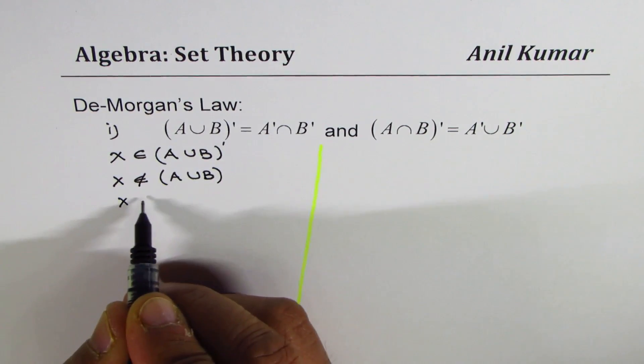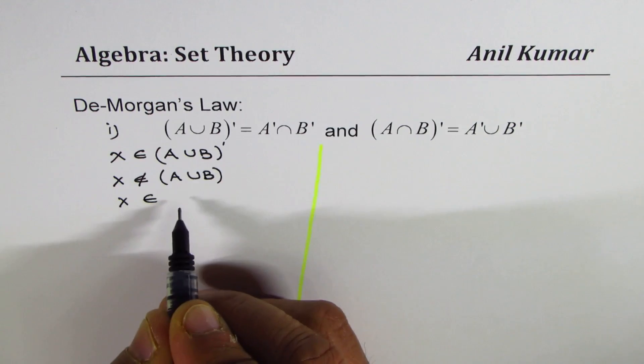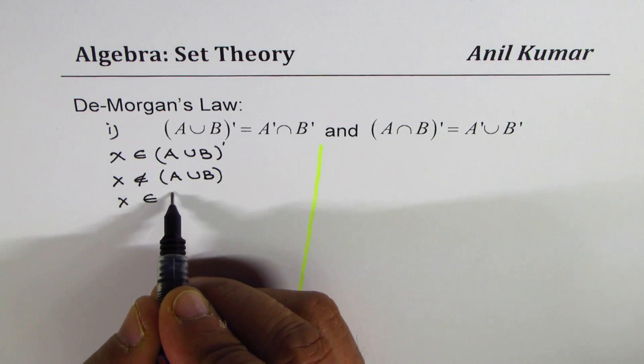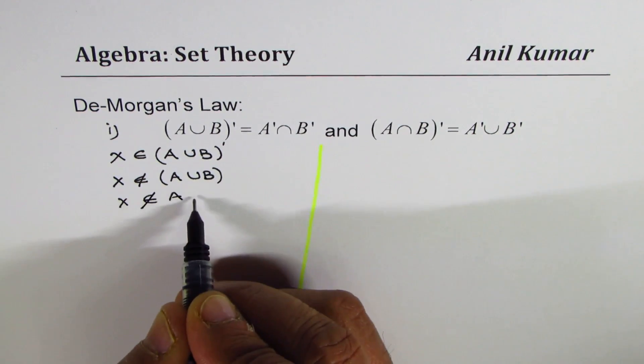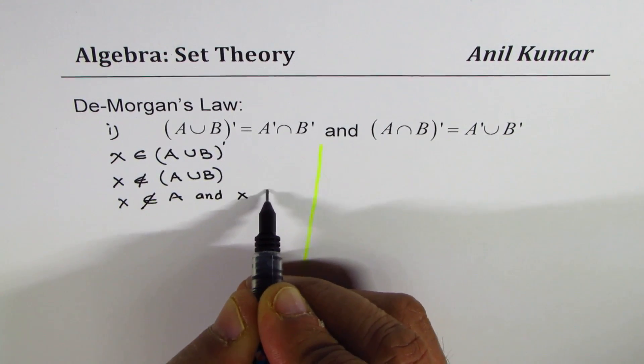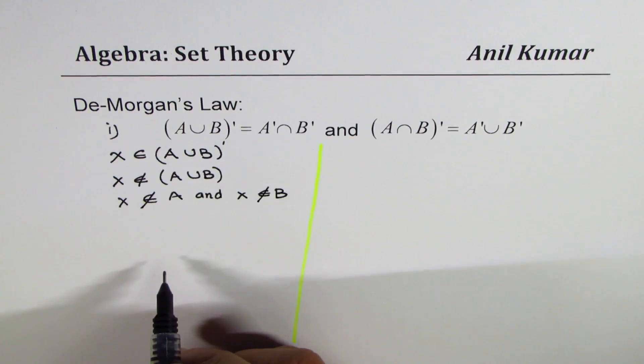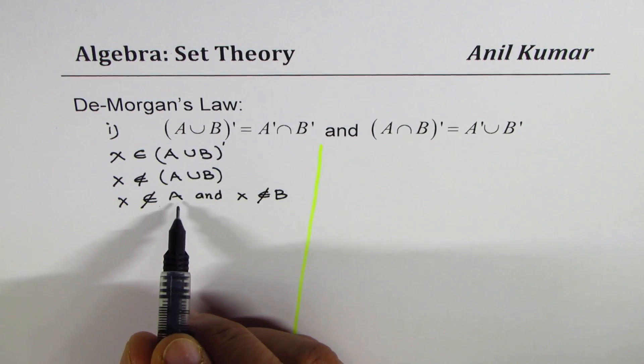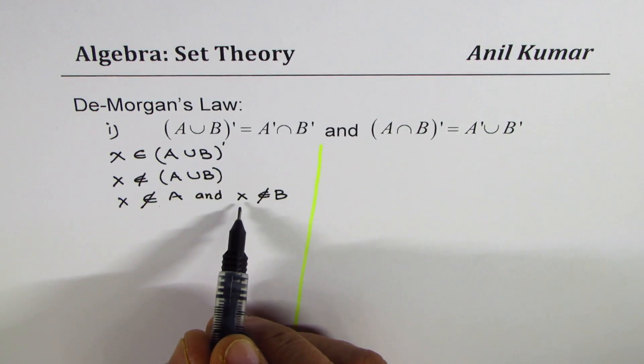It means that x does not belong to A and x does not belong to B.